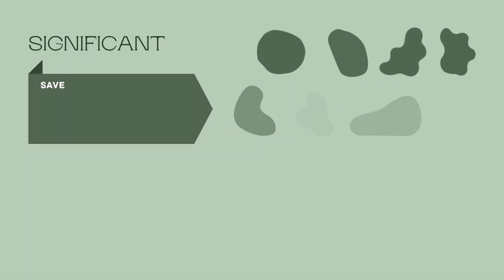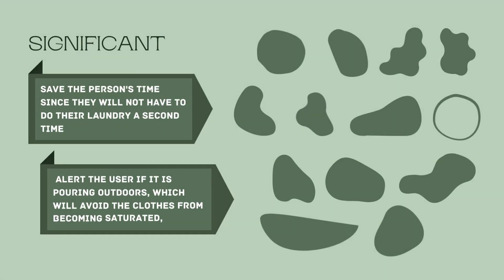The significance is to save the person time since they will not have to do their laundry a second time. Next, it will alert the user if it is pouring outside, which will avoid the clothes from being saturated.